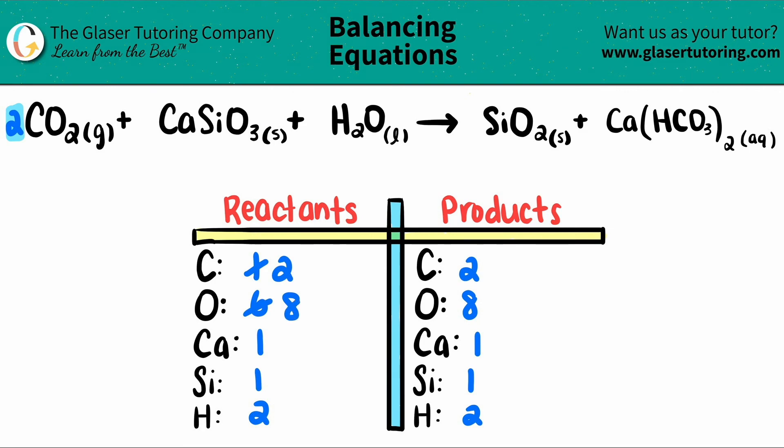And if you look at that, all of the numbers are balanced. Two carbons, eight oxygens, one calcium, one silicon, and two hydrogen. So by just balancing one thing, we balanced multiple elements.